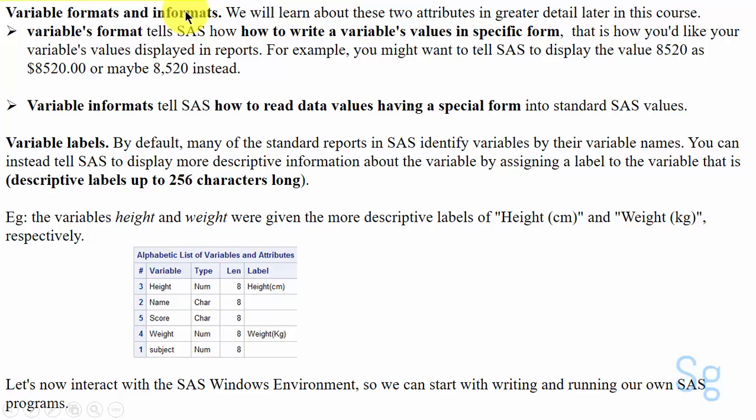Variable formats and informats: we will learn about these two attributes in greater detail later in this course. Variable format tells SAS how to write a variable's value in specific form, that is how you would like your variable's values displayed in reports, or output. For example, you might want to tell SAS to display the value 8520 as $8520.00 or maybe in commas instead.